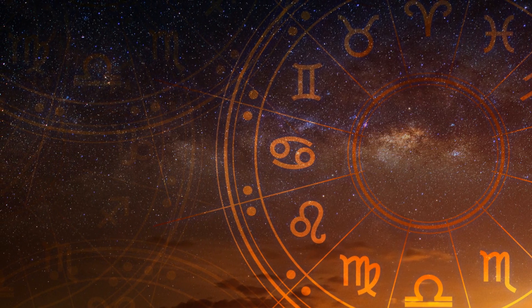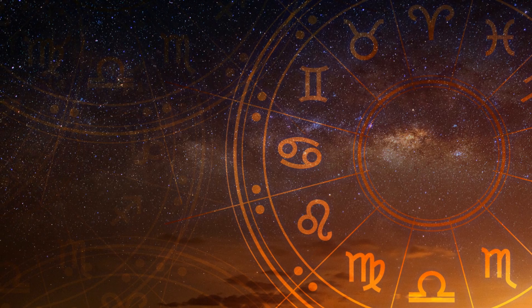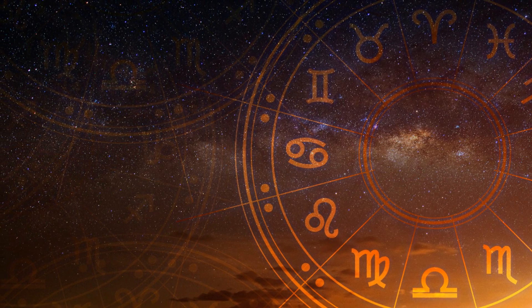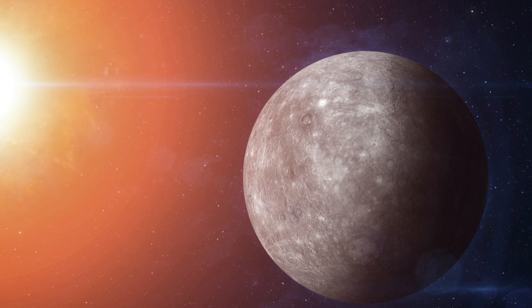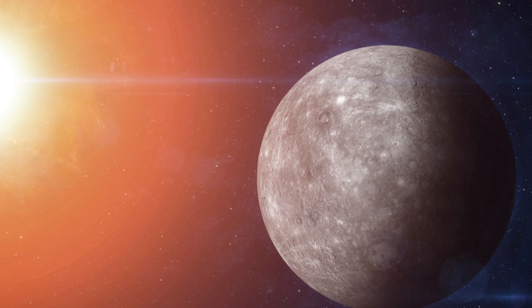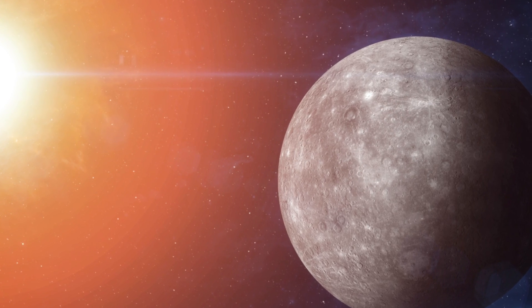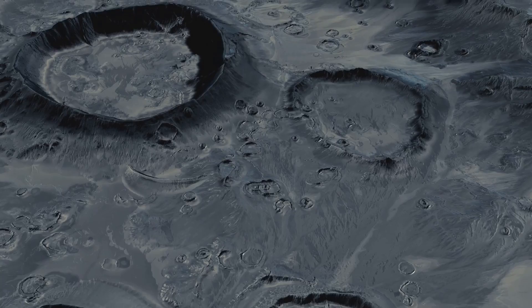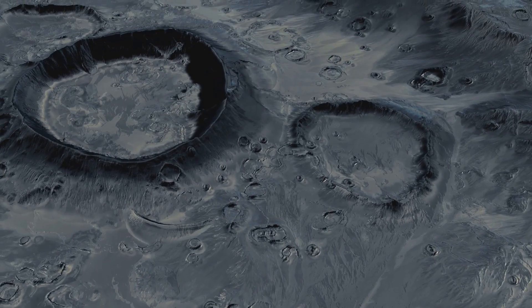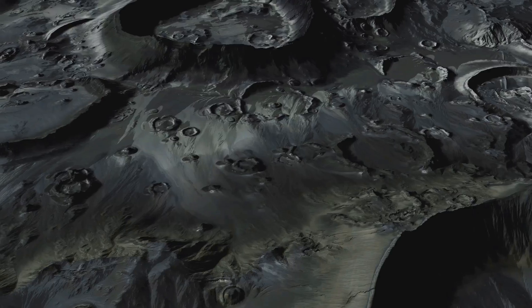Imagine a grape turning into a raisin. As the grape dries out, it shrinks and the smooth skin starts to wrinkle. This is a bit like what's happening to Mercury. As the planet's core cools and contracts, the surface shrinks and wrinkles, forming cliff-like landforms known as scarps. These scarps are like wrinkles on a face, telling a story of age and transformation.